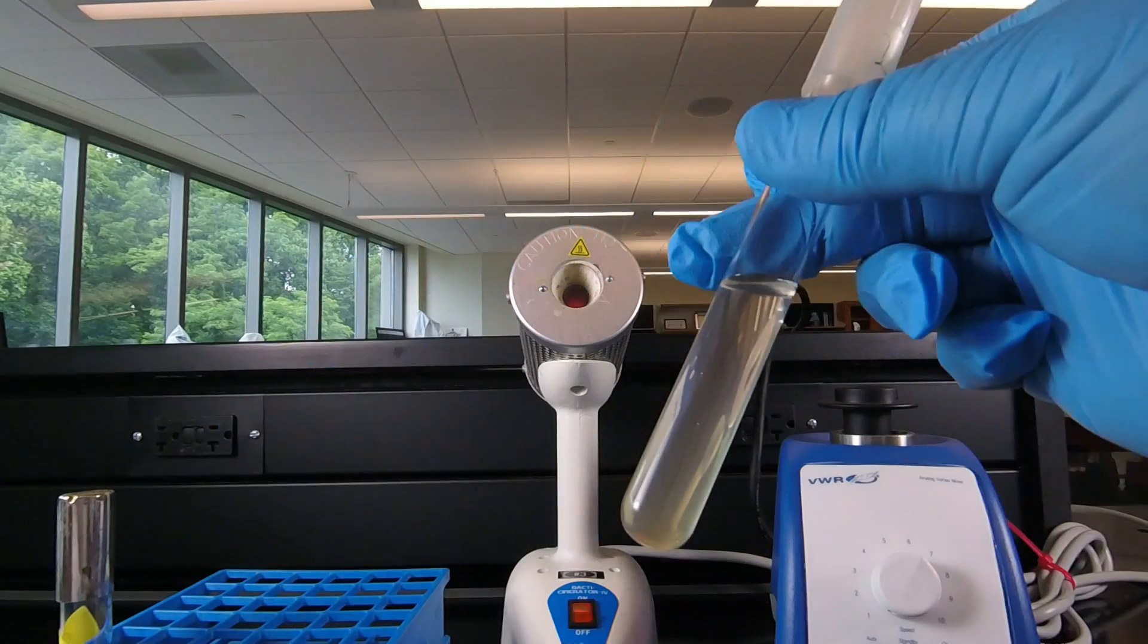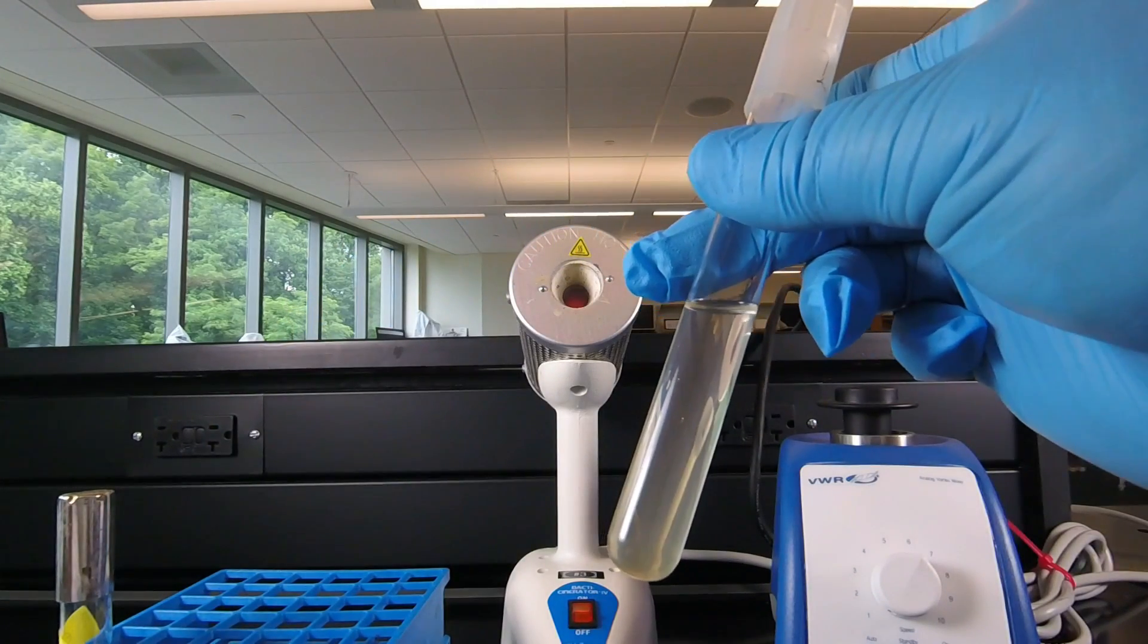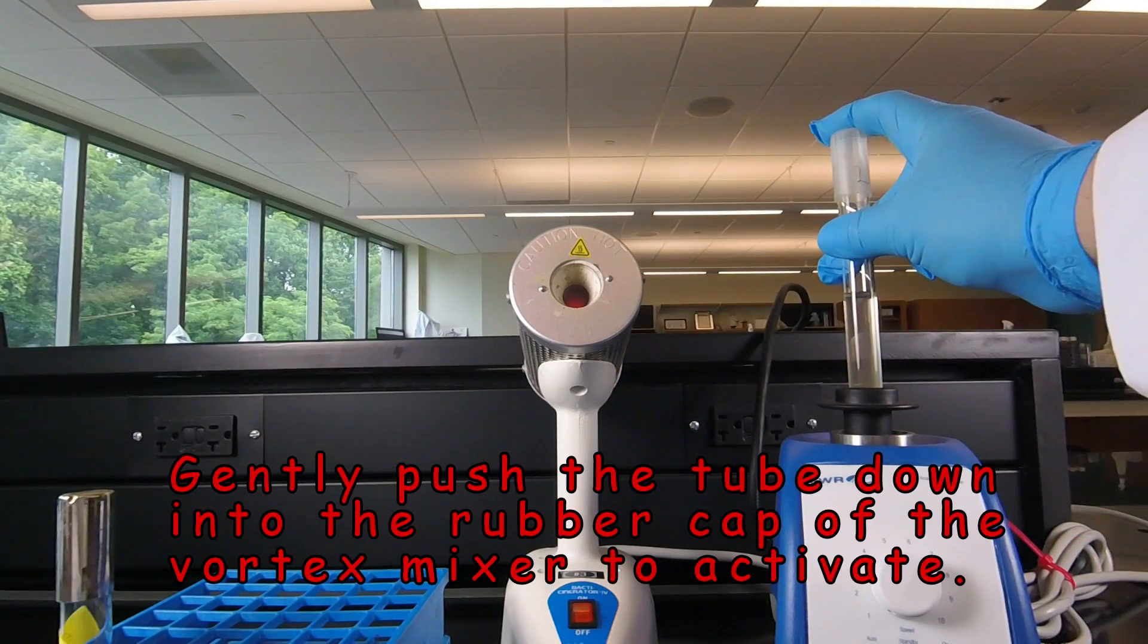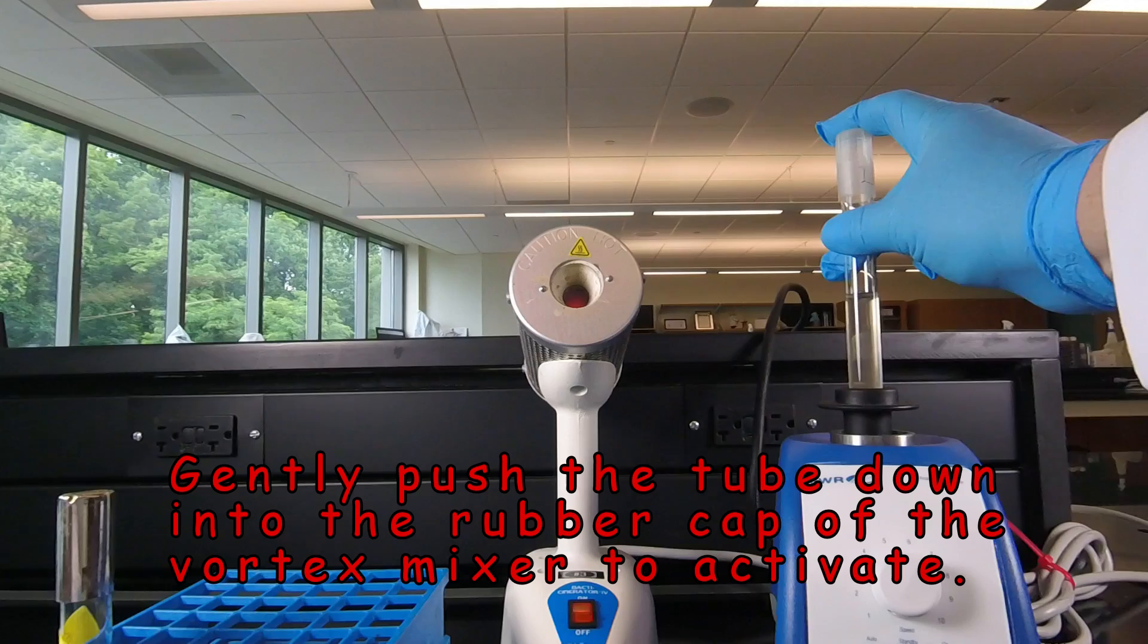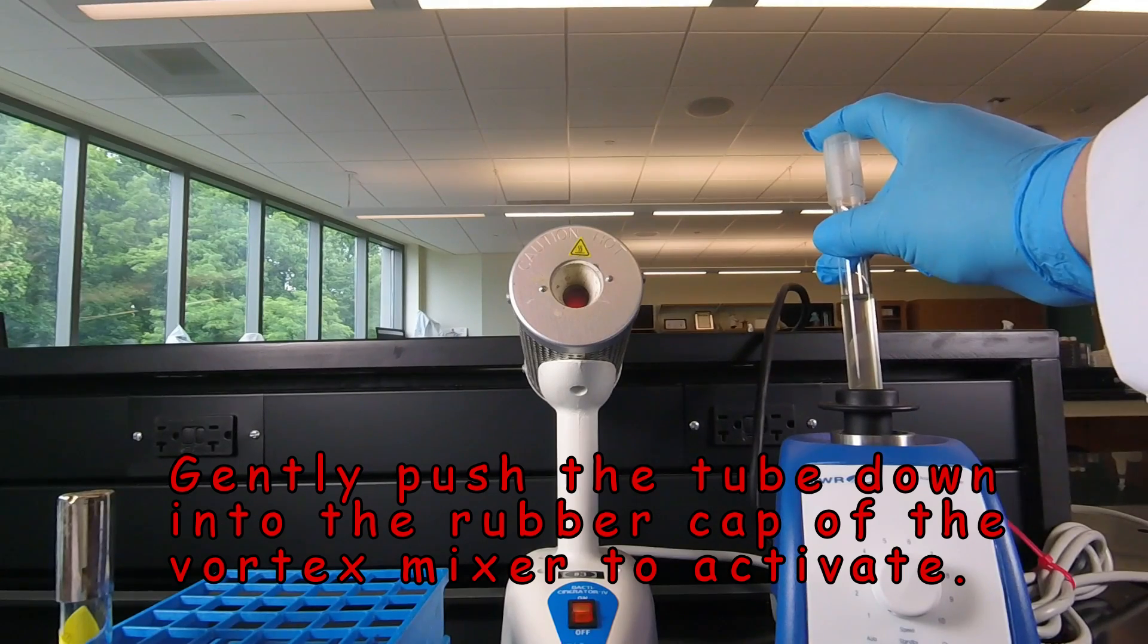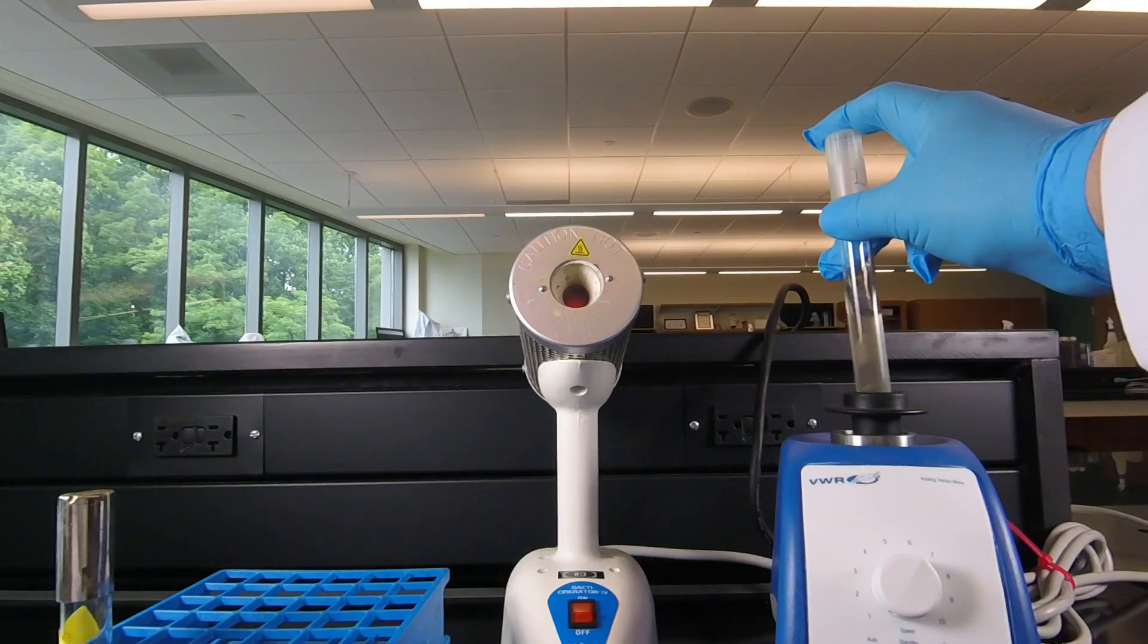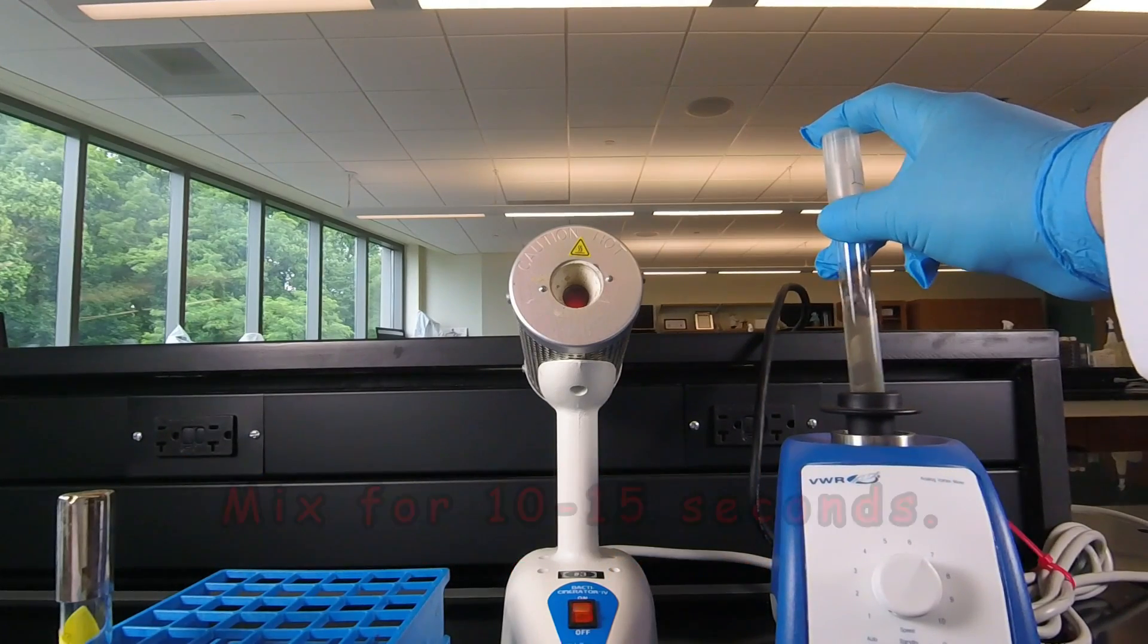So here's the tube we just added the E. coli to. Before we take any bacteria out of this tube we're going to put it in the vortex mixer. Kind of hold the tube so you're holding the glass in the cap and then just put down gently and it'll start vortexing. And we're going to do that for like I said about 10 or 15 seconds.